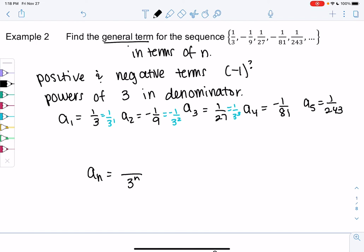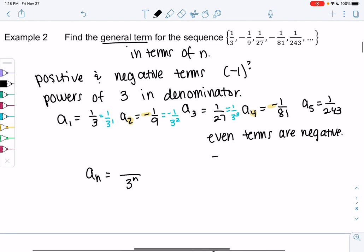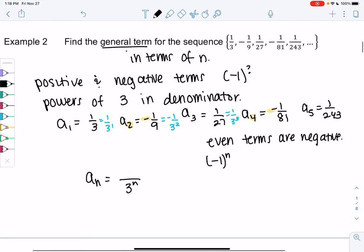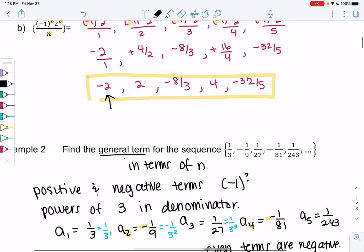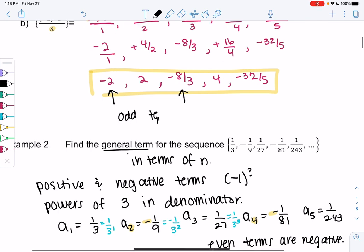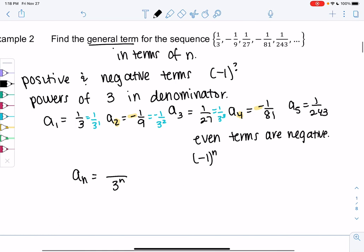And then this one's a little different than the previous one. Notice my even terms are the negative ones now. The 2nd and the 4th term are negative. So if we do negative 1 to the n, like the previous example, my odd terms were negative. The 1st and the 3rd were negative. So we're going to have to change that power a little bit. So negative 1 to the n will make the odd terms negative and the even terms positive.